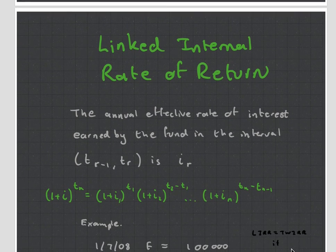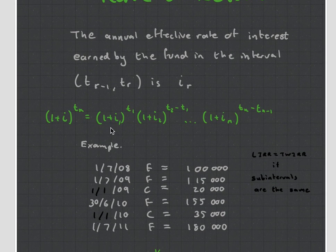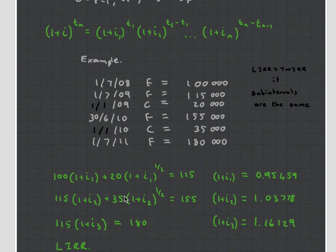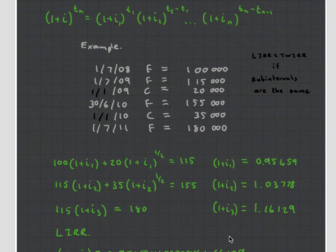Then there's the final one, the linked internal rate of return. Using the exact same set of examples, we can use this formula again. We're going to try and work out what this final i is over here. And what we do is we calculate a whole bunch of internal interest rates for the first few years. So we have 100 plus 20 equals that, and we work out each of them, and then we link them all together. Like I said, if you haven't read anything on this chapter and you're looking at this video for the first time, you're probably going to be like, what on earth is going on? But read through your course notes, do some examples. You'll find that this is actually very easy.